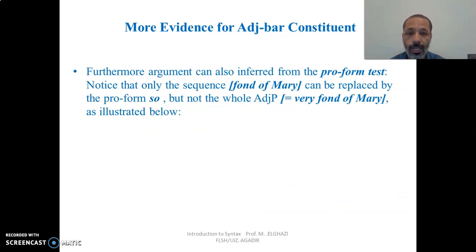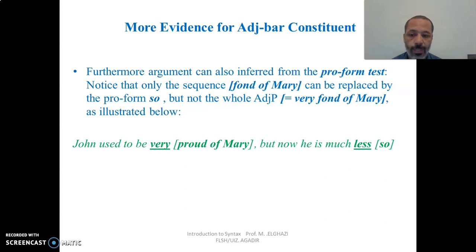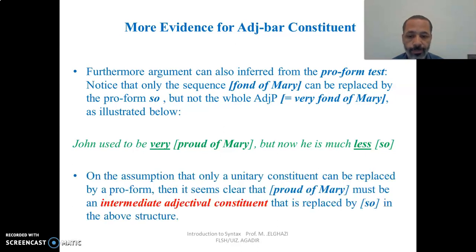Another argument in support of the adjective-bar constituent is based on the pro-form test. Notice that only the sequence 'fond of Mary' can be replaced by the pro-form 'so,' but not the whole adjective phrase 'very fond of Mary.' For example: 'John used to be very fond of Mary, but now he is much less so.' Here 'so' replaces 'proud of Mary,' not 'very proud of Mary.' On the assumption that only unitary constituents can be replaced by a pro-form, 'proud of Mary' must be an intermediate adjectival constituent consisting of the adjective and complement, without the specifier.